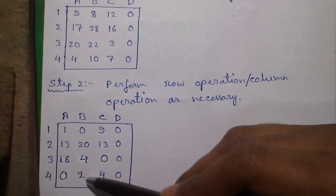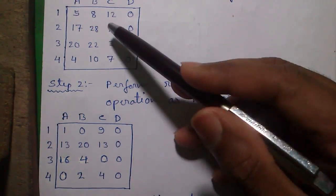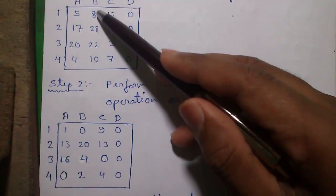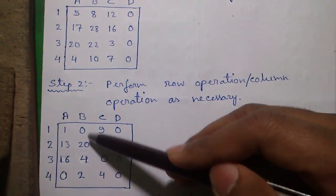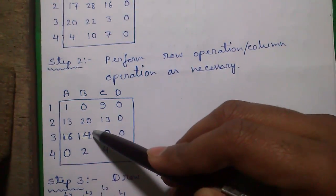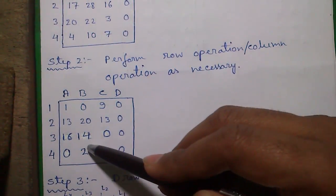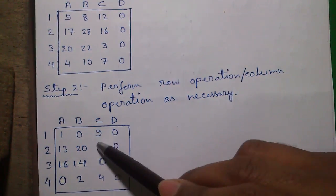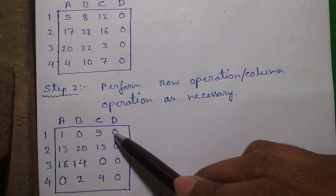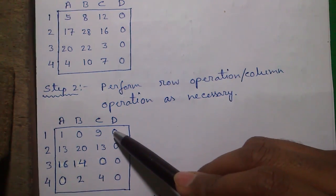So perform the column operations in column 2. Smallest number is 8. 8-8=0, 28-8=20, 22-8=14, and 10-8=2. So performing column operations you will get this matrix with at least one 0 in each row and each column.